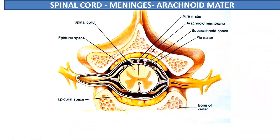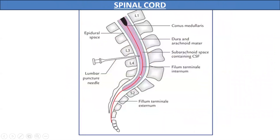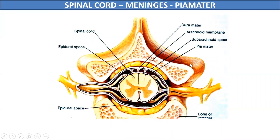The next layer of meninges is the thin transparent arachnoid mater. There is a space between the dura and the arachnoid mater called the subdural space, which contains a thin amount of watery fluid and allows mobility of the dura over the arachnoid mater. The arachnoid mater, like the dura mater, also continues up to the second sacral vertebra. The pia mater is the innermost, thin, and vascular layer of meninges around the spinal cord, and it undergoes various modifications to keep the spinal cord in position during movements of the vertebral column.